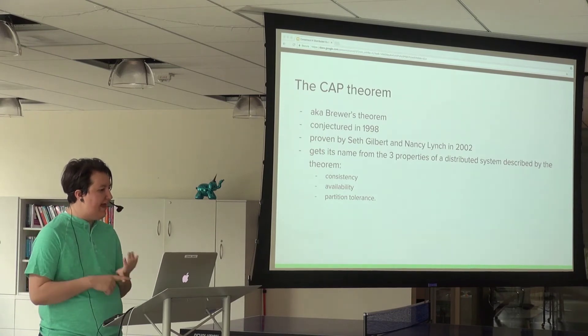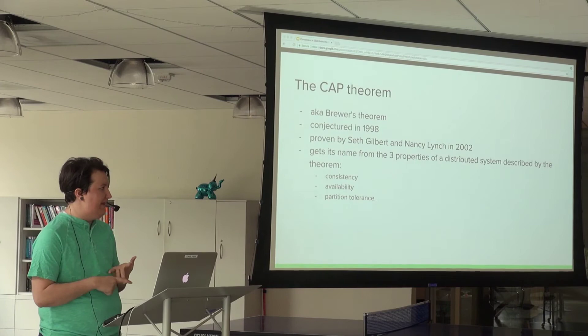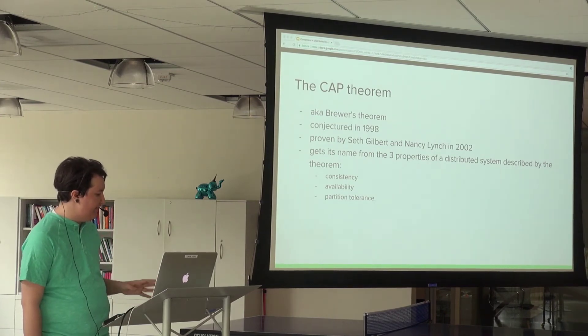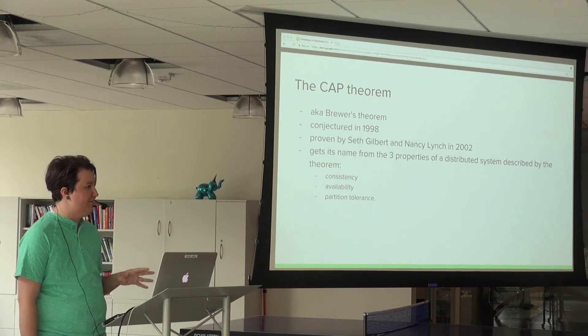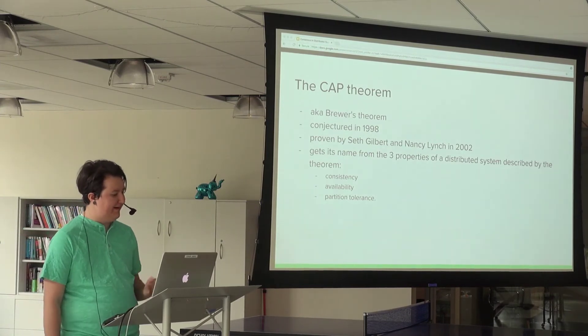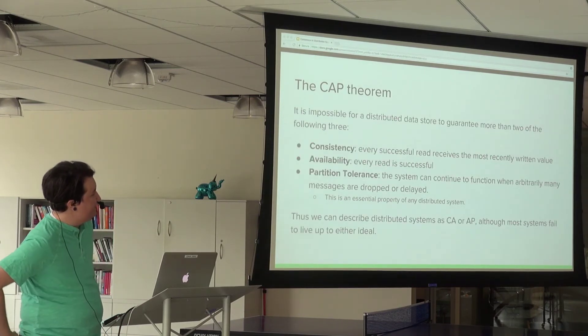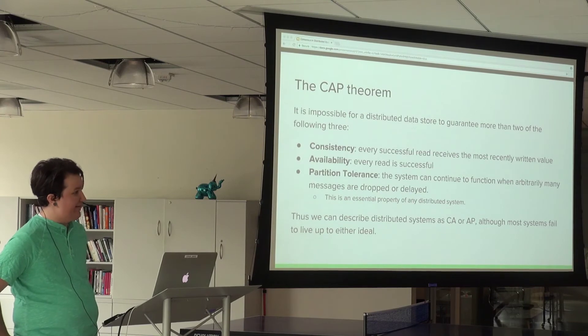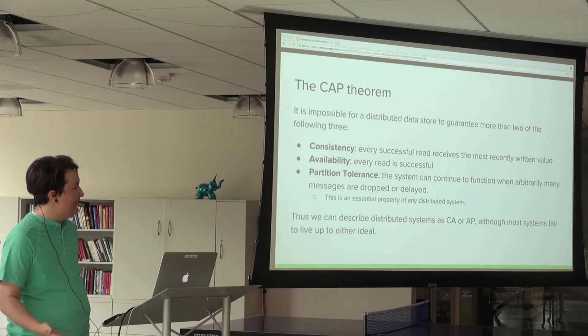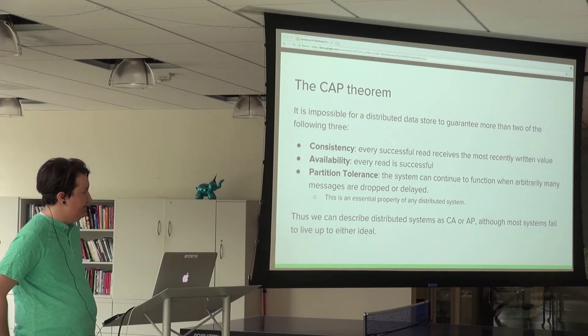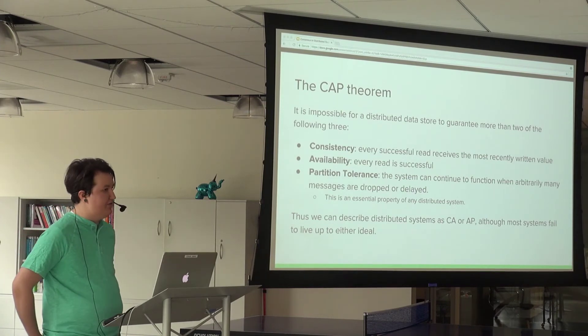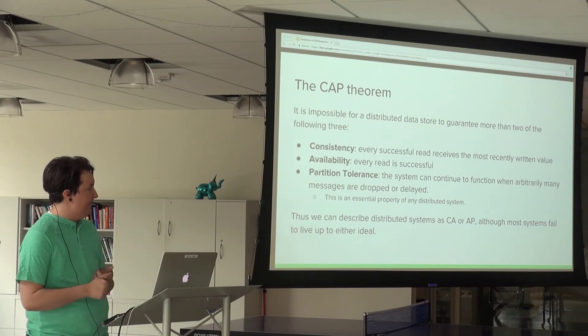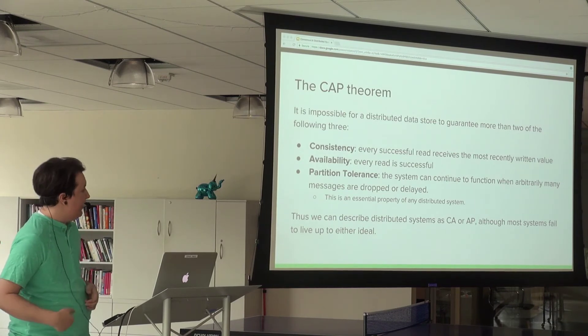CAP says you have three basic properties you might want in a distributed system: consistency, availability, and partition tolerance. Every system gets to choose at most two. It gets talked about a lot because people like to classify systems as CA, AP, or CP. CA is not actually possible. But the reality is the definitions of consistency and availability are very strong, so very few systems actually meet them.